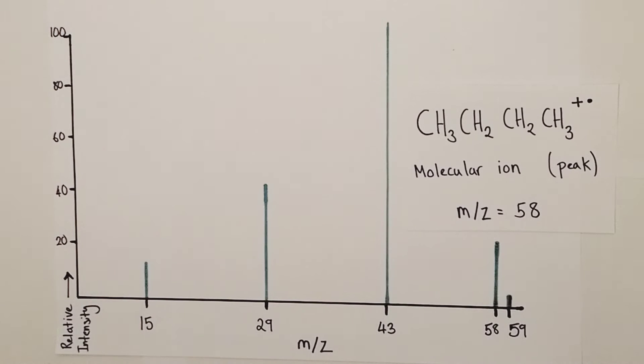So, for good measure, we have now labeled the molecular ion peak at mass charge ratio of 58, and we've labeled it as the molecular ion itself, butane, with a positive charge, and also as a radical, due to the fact that these butane molecules have had one electron knocked off, making them positively charged ions, but also, at the same time, radicals.